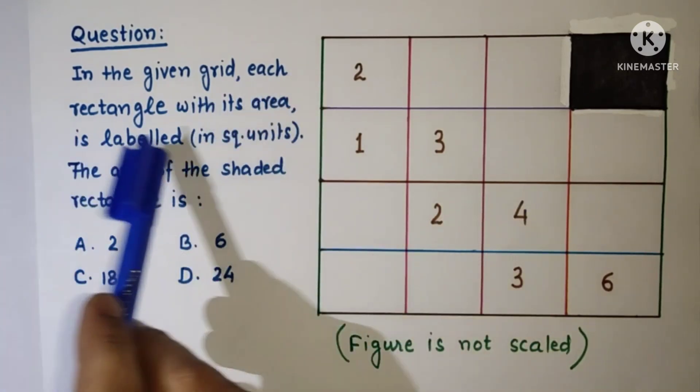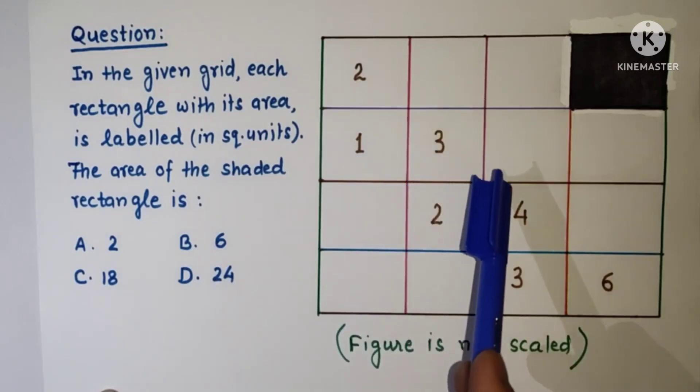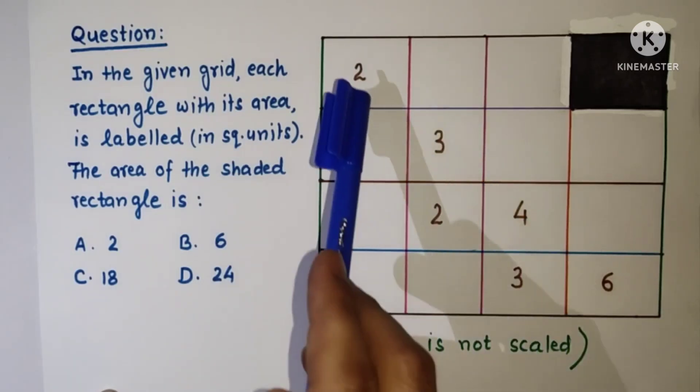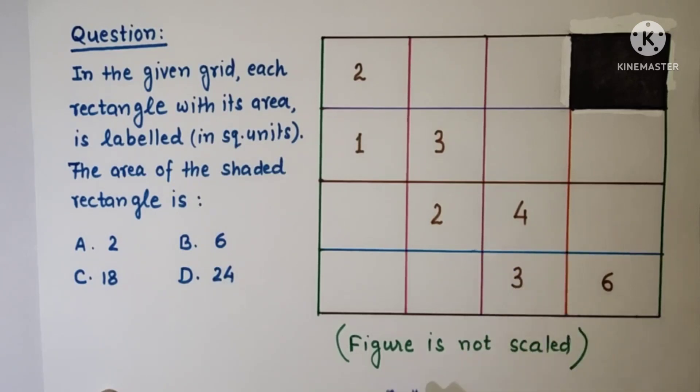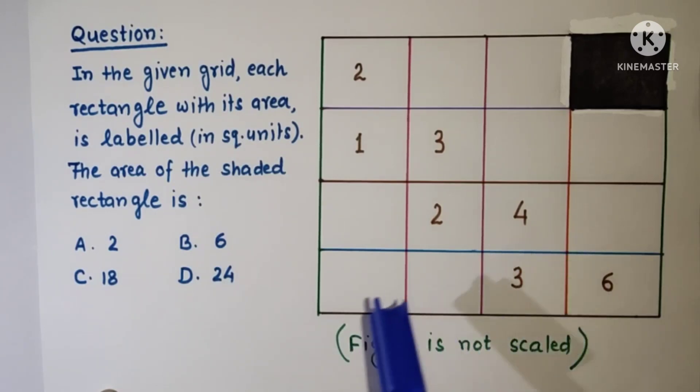In the given grid, each rectangle with its area is labeled: 2, 1, 3, 4, 2, 3, 6 in square units. We have to find the area of the shaded rectangle, and this figure is not drawn to scale. This question is asked in Delhi University engineering entrance test. We have four options: 2, 6, 18, and 24.